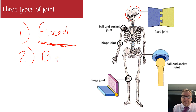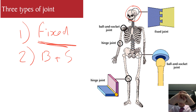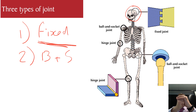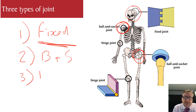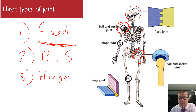The second joint type is the ball and socket. It's literally where a ball fits into a socket, allowing movement in many directions — it's a very flexible joint. The two main examples are the shoulder, which you can move in almost any direction, and the hip. The third type is the hinge joint. Like a door that can only open and close, a hinge joint only moves in one plane. Examples are the knee, which only moves the lower leg up and down, and the elbow.